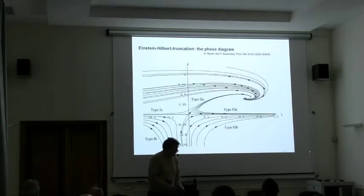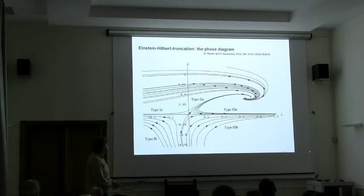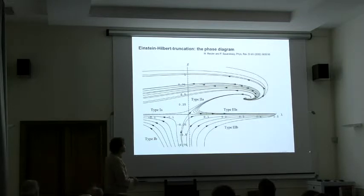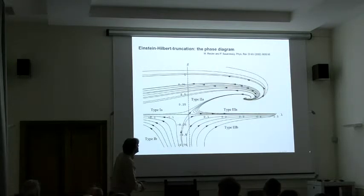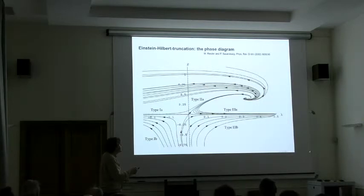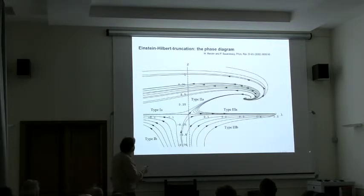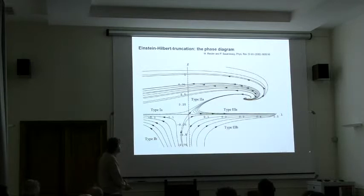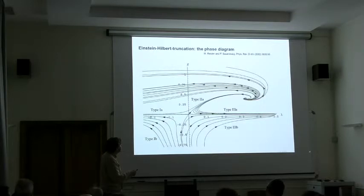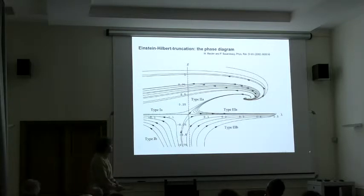You can integrate this equation. This was already done a long time ago. Here we have dimensionless Newton's coupling. Here is the dimensionless cosmological constant. If you restrict to positive Newton's constant here, you see there is interplay between two fixed points: the Gaussian fixed point here, non-Gaussian fixed point here. All flows emanate from this non-Gaussian fixed point. They go to smaller energies. The things that go down here to the Gaussian fixed point regime develop something like a classical GR regime. Here on this side we have a positive cosmological constant. Here is a negative cosmological constant. And here we get something that has zero cosmological constant.